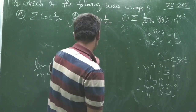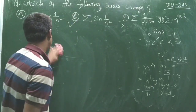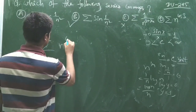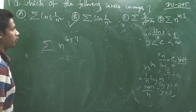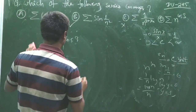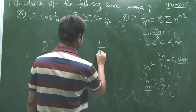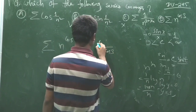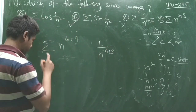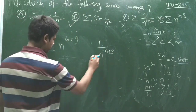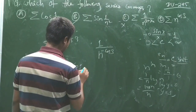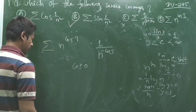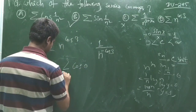For the last option, we have the summation of n^(cos 3). We can rewrite this as 1/n^(−cos 3). Now, cos θ is always bounded...